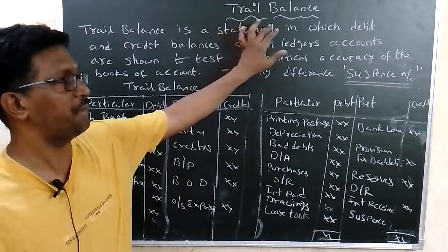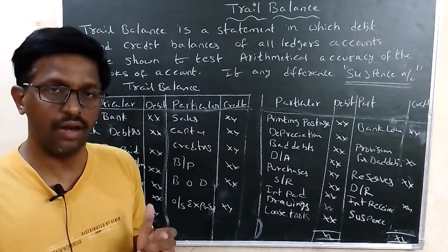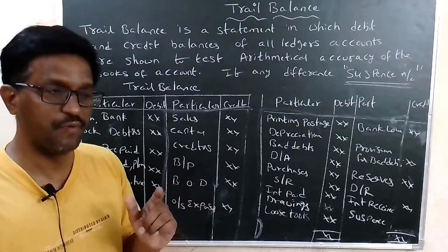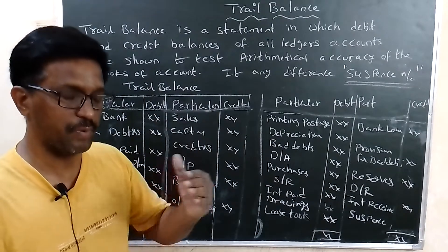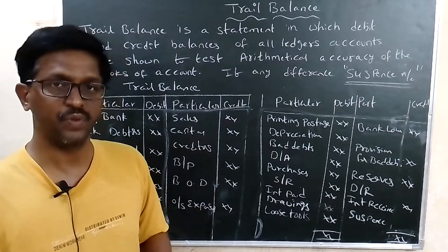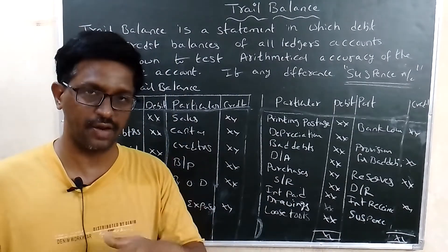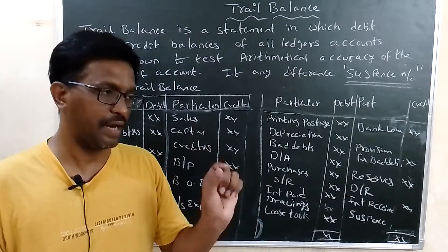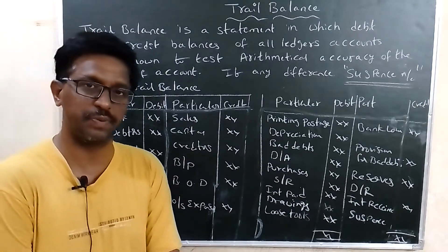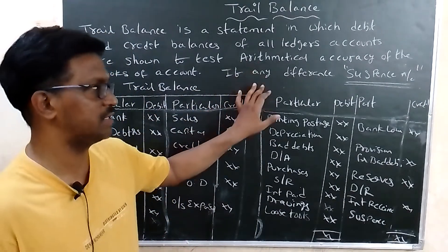The topic is trial balance. Trial balance means balances of all ledger accounts. It is prepared before preparing the final accounts. Trial balance is a statement in which debit and credit balances of all ledger accounts are listed. Before we prepare the final accounts, we must prepare the trial balance.